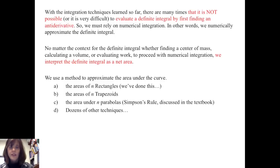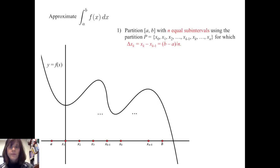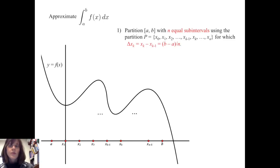In this video, we'll specifically examine the use of the trapezoidal rule. Suppose we wish to approximate the definite integral from a to b of f dx. We first partition the closed interval from a to b using n equal subintervals, using the partition p with x sub 0, x sub 1, x sub 2, continuing to x sub k, and ending at x sub n, where delta x sub k equals x sub k minus x sub k minus 1, and equals b minus a divided by n.